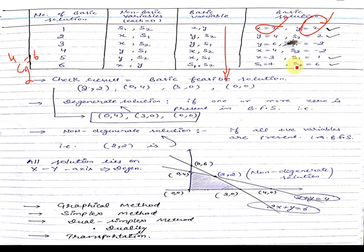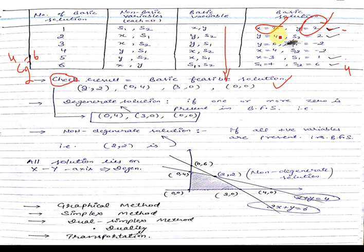Now, the solutions which have been marked with a check sign — those four solutions — are feasible solutions. What is a feasible solution? A feasible solution is one in which the basic solution consists of all positive elements or positive numbers. For example, in the first case we get values 2, 2, 0, 4. But one solution has x = 2, s2 = minus 2, which has a negative value — hence it cannot be a basic feasible solution. Similarly, another has s1 = 4 and s2 = minus 2. The rest of the four are the feasible solutions.